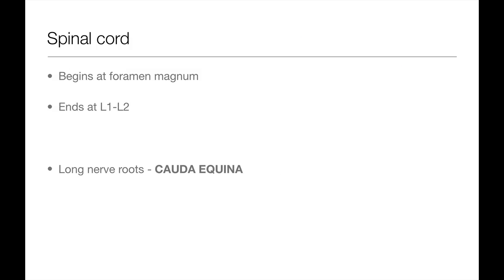The spinal cord, which sits in the spinal canal, begins at the foramen magnum and ends at around L1 to L2. Because the spinal cord ends before the vertebral column has ended, the nerve roots that normally come out of L3 to S5 are very long. The collection of long nerve roots found at the bottom of the spinal cord are collectively known as the cauda equina.